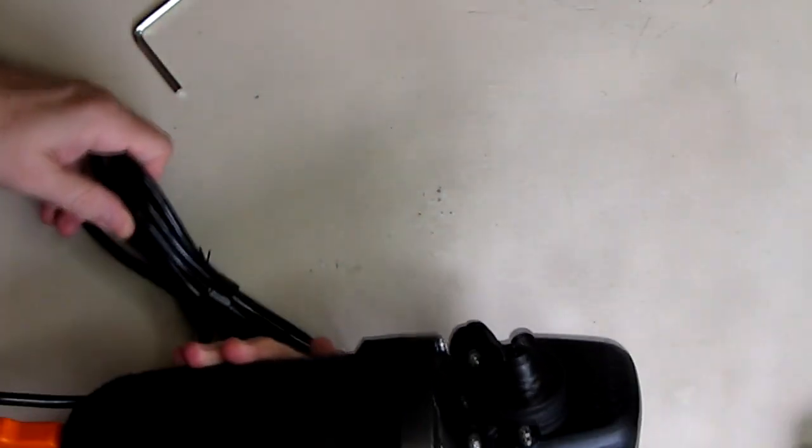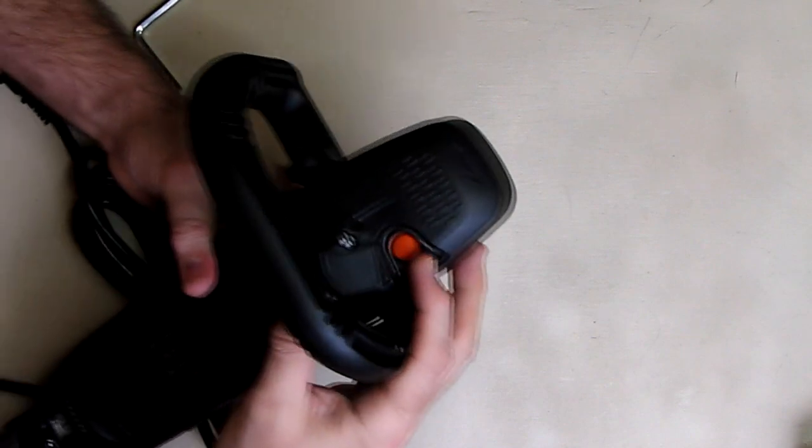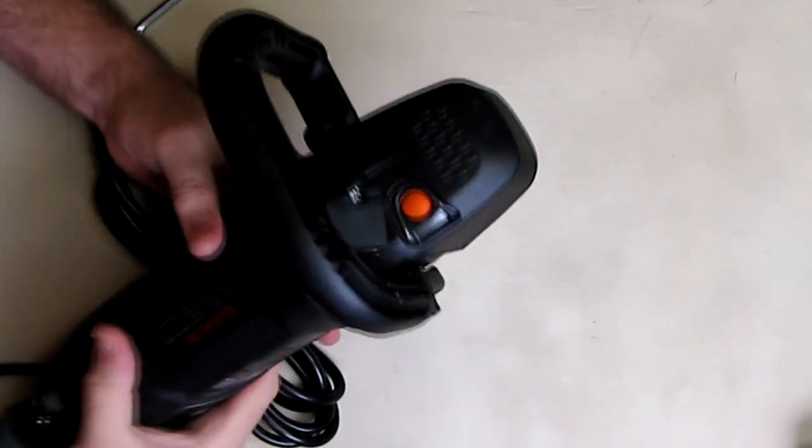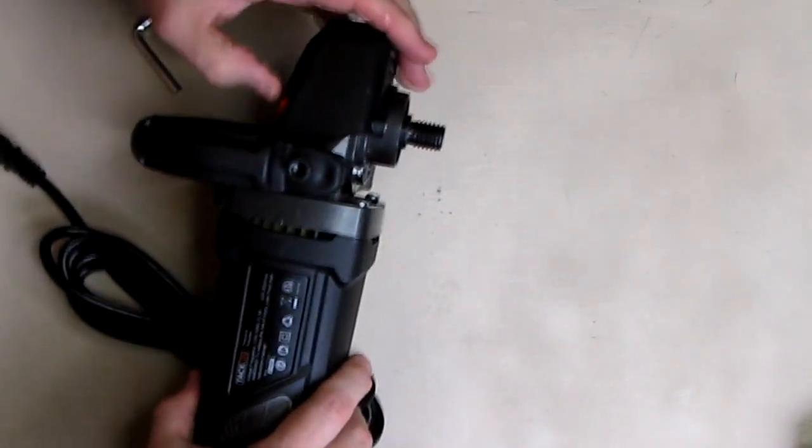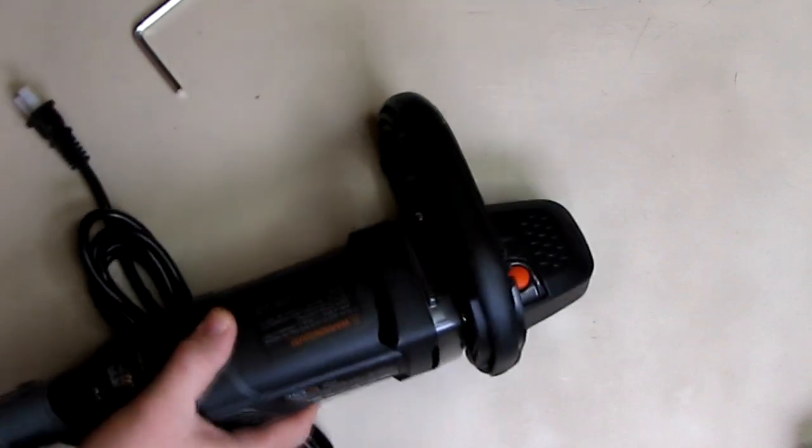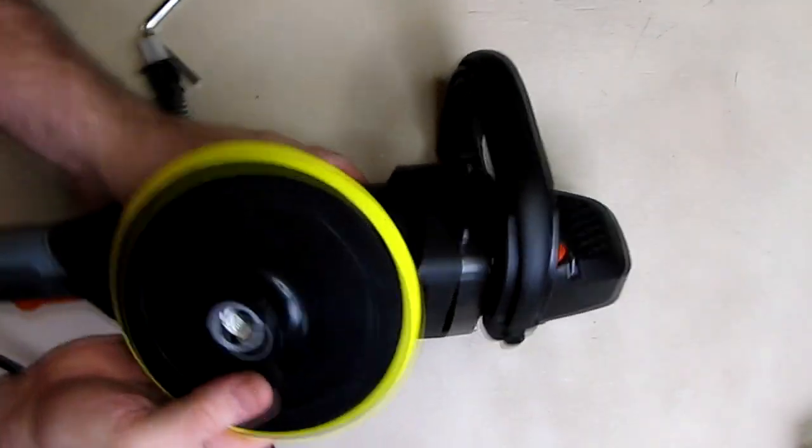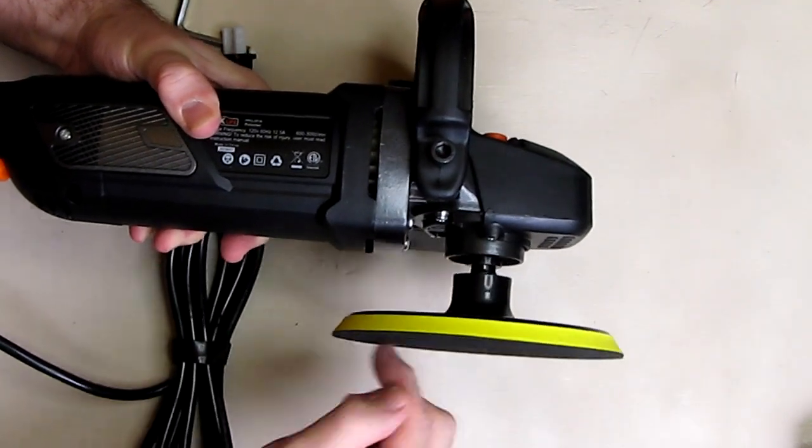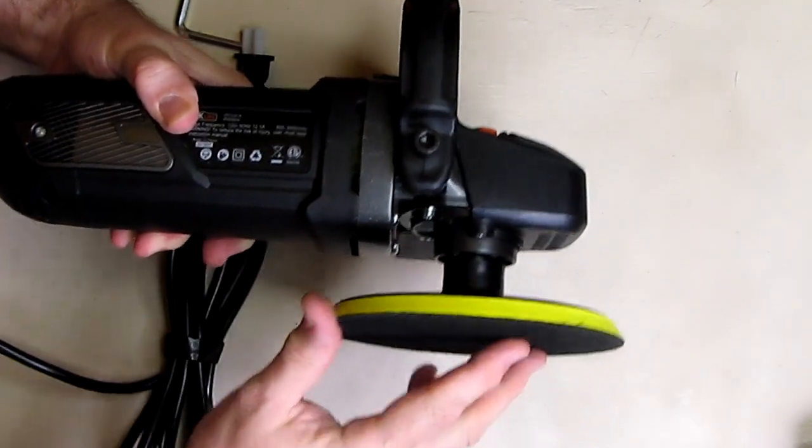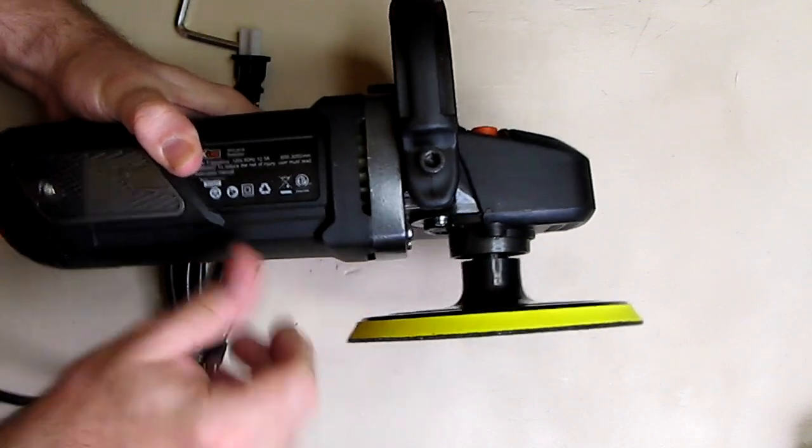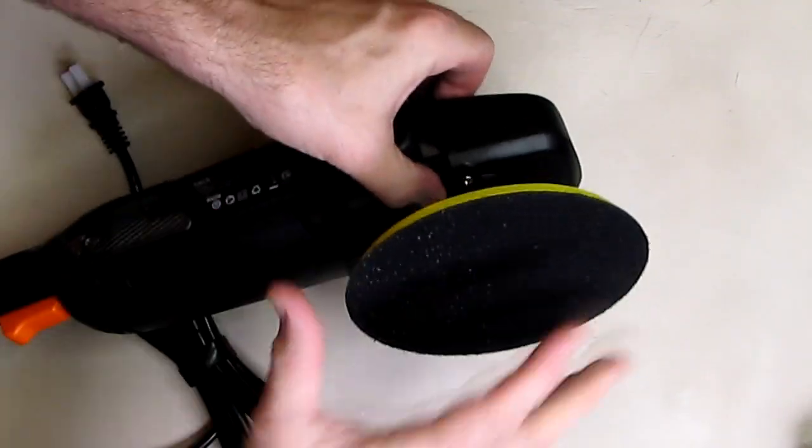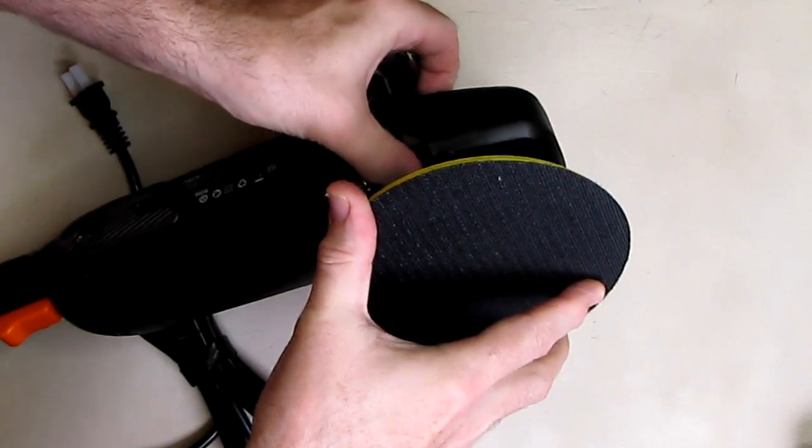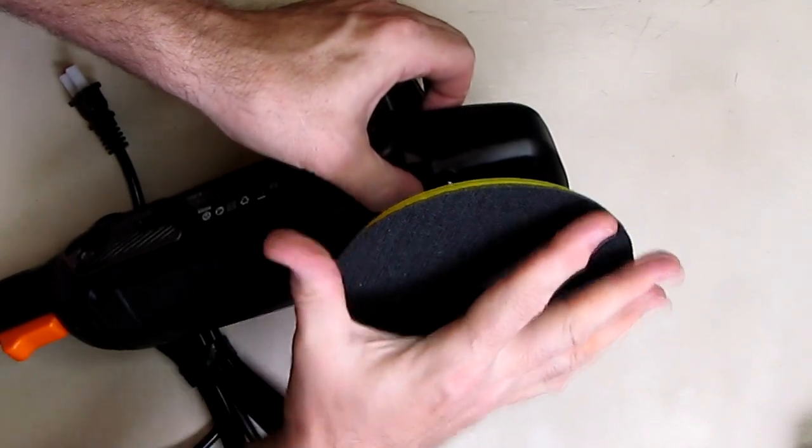Now you'll notice there's a big orange button right here, and that is a lock button that will lock the spindle. That's what allows you to put on and tighten the various wheels. So you can push that lock in place and then it locks it, and then you could tighten this up.